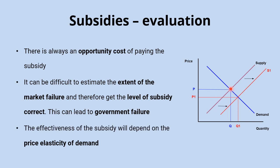Finally, just like with the tax, we can discuss the effectiveness of the subsidy depending on price elasticity of demand. If the demand curve is relatively price elastic — a shallower curve — the same subsidy shifting the supply curve to the right would have a bigger impact on quantity. If demand is price inelastic — a steeper curve — the same shift in the supply curve would cause a smaller increase in quantity. So the effectiveness of the subsidy in increasing quantity towards the socially optimal level depends on the price elasticity of demand.